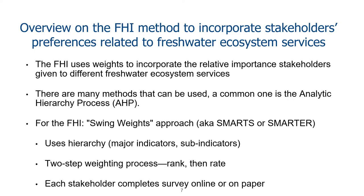In this slide, I present an overview of the FHI method to incorporate stakeholders' preferences related to freshwater ecosystem services. The FHI uses weights to incorporate the relative importance stakeholders give to different freshwater ecosystem services. A common method is the analytic hierarchical process. In the case of the FHI, we are using what we call swing weights, an approach also known as SMARTS or SMARTER. We also use a hierarchical structure because we have major indicators and sub-indicators.